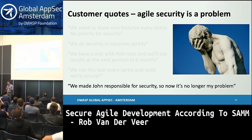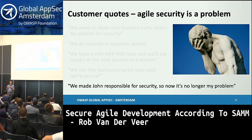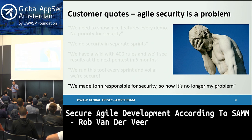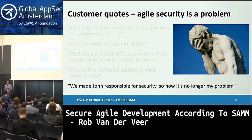Finally: 'We've made John responsible for security, so now it's no longer my problem.' You probably recognize this. This practice is based on appointing someone with responsibility in a team regarding security — that's fine as long as everybody else feels the responsibility as well. The responsibility for this champion is ideally the role of a liaison: someone who brings people together and shares knowledge. It's not the person that needs to take care of security alone, and not the person responsible when there's a security incident.